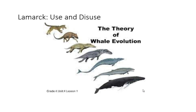Lamarck also had the idea of use and disuse: by using a part of the body, an animal could alter and improve it over time, like the giraffe. By not using a part of the body, an animal could lose it — for instance, whales at one time had four limbs but don't anymore because they stopped using them, according to Lamarck. We know this to not be true today, but Lamarck did come up with his own idea of how species change over time.